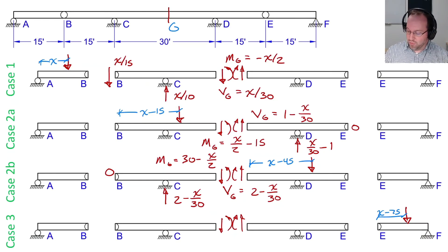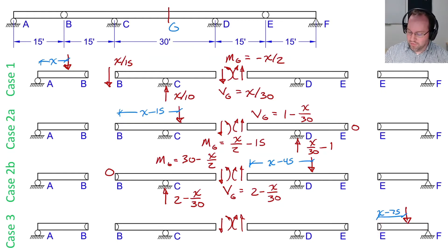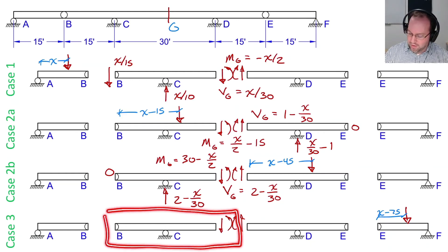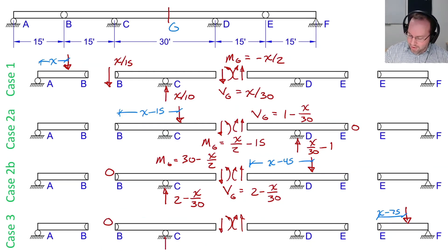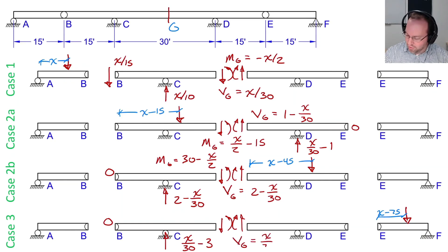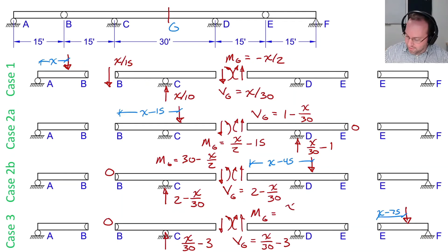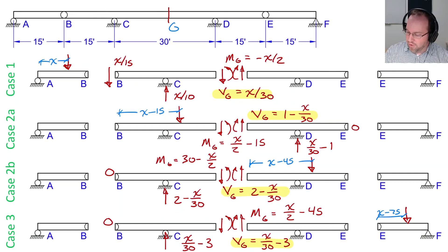Finally, I get to case three — the reaction forces apply for X between 75 and 90. In this case, I'll consider the free body diagram for BC. The shear at B is zero, and my reaction force is X over 30 minus three. Therefore, the shear at point G is equal to X over 30 minus three from the sum of forces. And my moment at G, taking a sum of moments, is X over two minus 45. So I've now solved for all of my shear at point G and all of my moments at point G as that load moves across the structure.